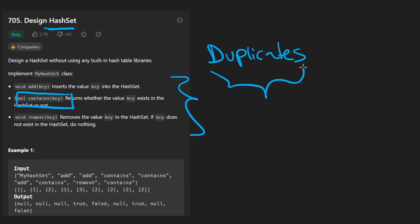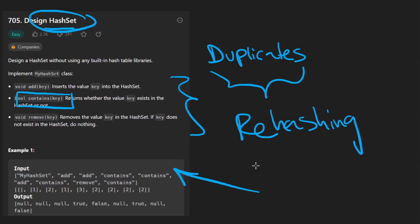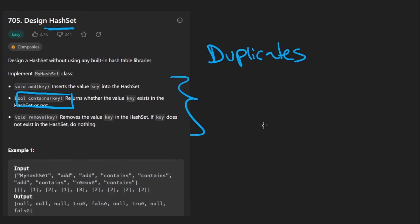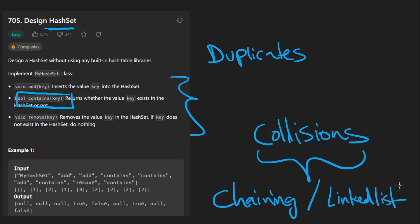The hardest parts about implementing hash sets or hash maps are: one, implementing rehashing — because just like dynamic arrays, hash maps and hash sets can grow in size; and two, handling collisions. Since we're only performing about 10,000 insertions, that's pretty much our max size, so we don't need rehashing here. For collisions, I'll use the simplest approach: chaining, using a linked list.